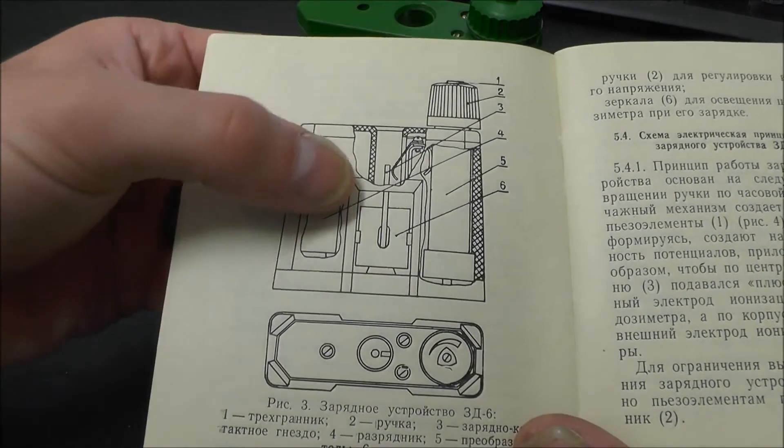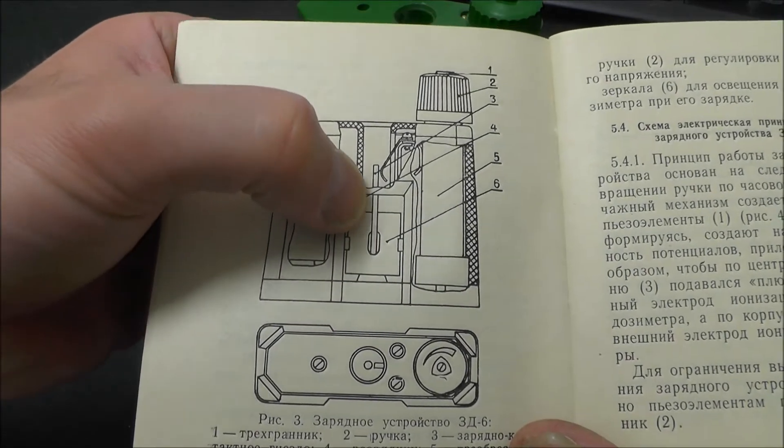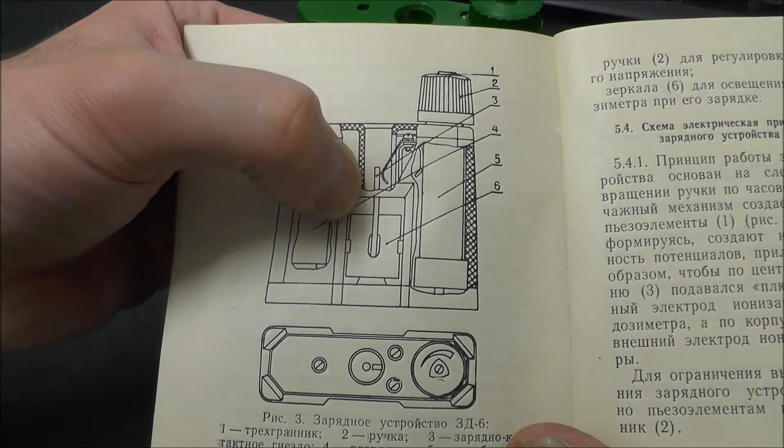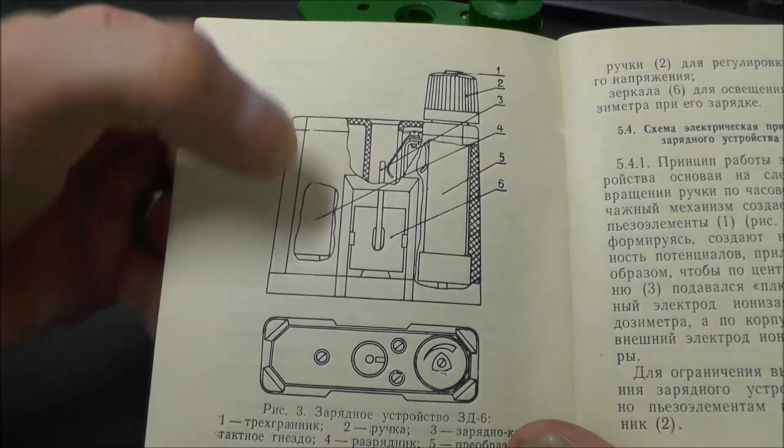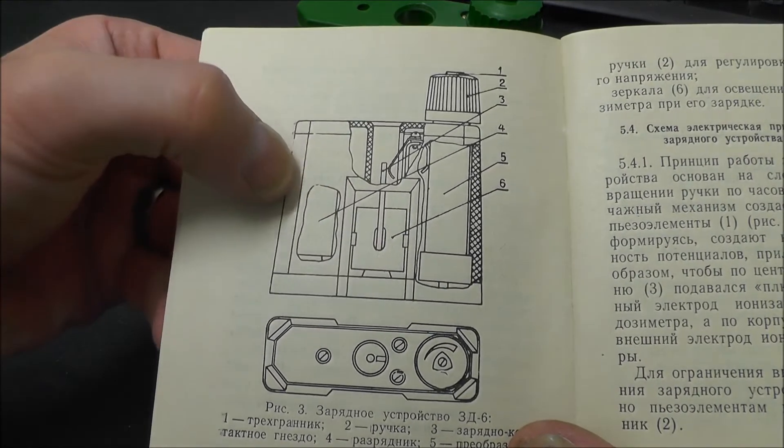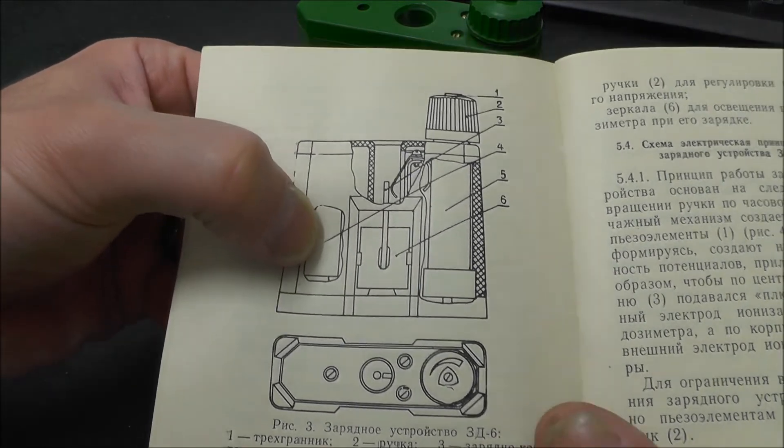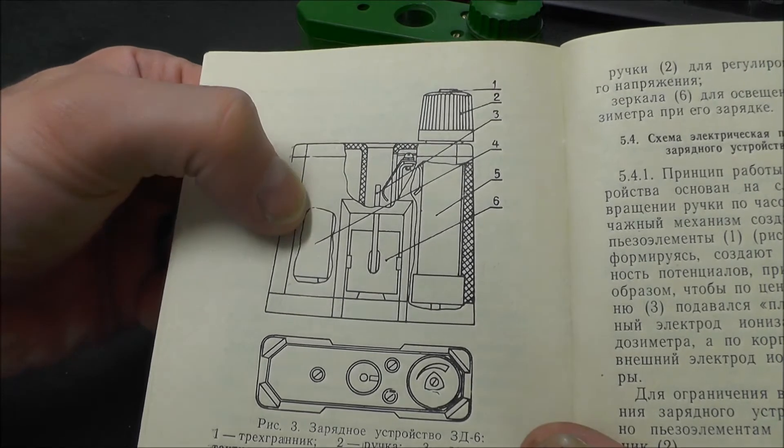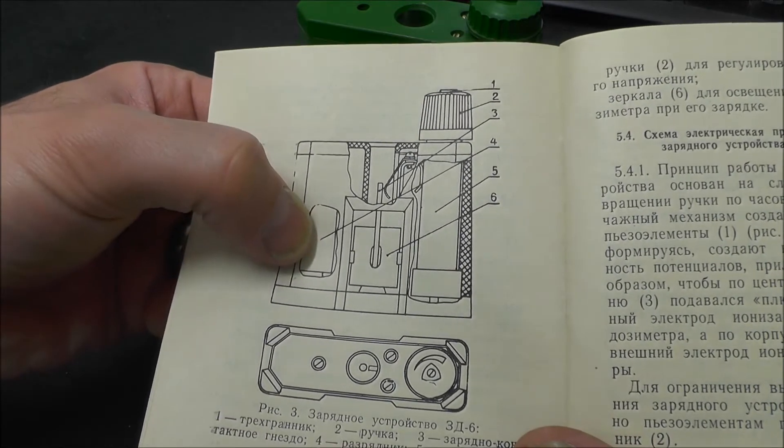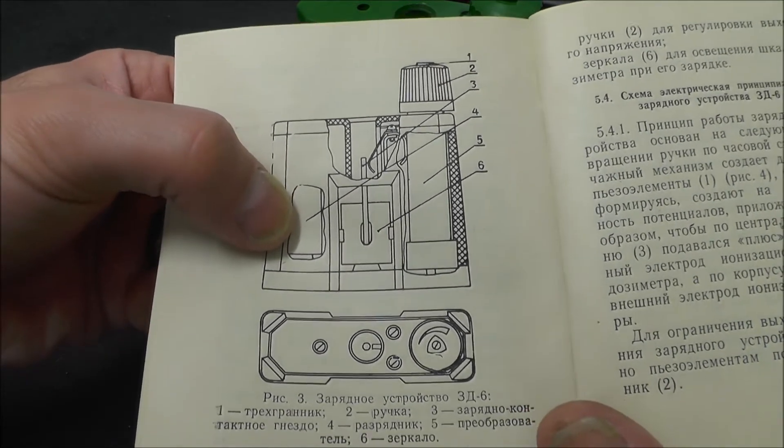So you've got the charging prong which the pen attaches to, the mirror just here, and this device here which is intriguingly called an arrester. I'm not quite sure what that is, so that should prove interesting when we come to look at it.